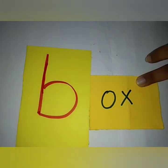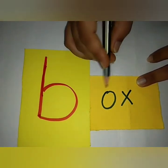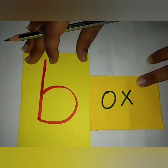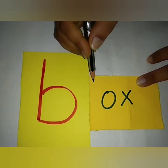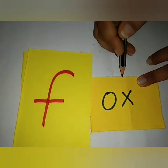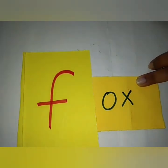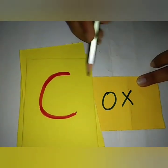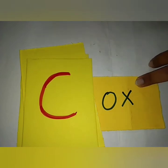Okay, I will repeat for you once again. If it is B — B. Ox. Box. B. Ox. Box. S. Ox. Sox. S. Ox. Sox. K. Ox. Cox. K. Ox. Cox.